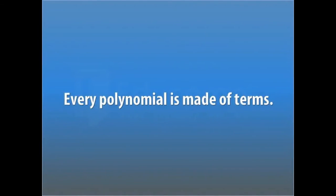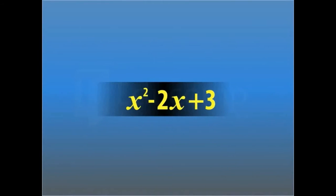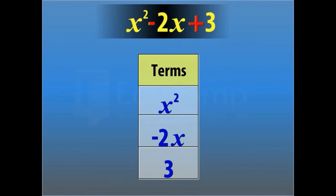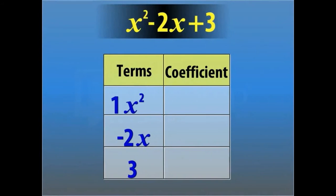Every polynomial is made of terms. Look at this polynomial: x squared, minus 2x, and 3 are the three terms of this polynomial. Note that the addition and subtraction signs separate the different terms. Each term has a coefficient. The coefficient of x squared is 1, the coefficient of minus 2x is minus 2, and 3 is the coefficient of x raised to the power 0.